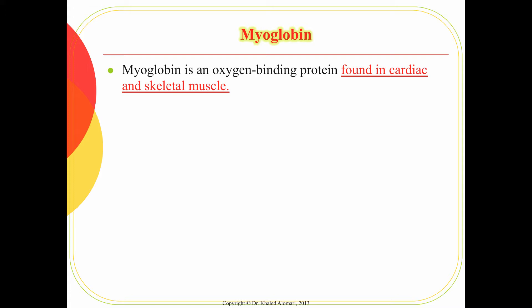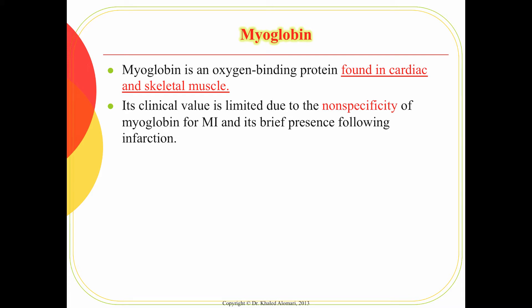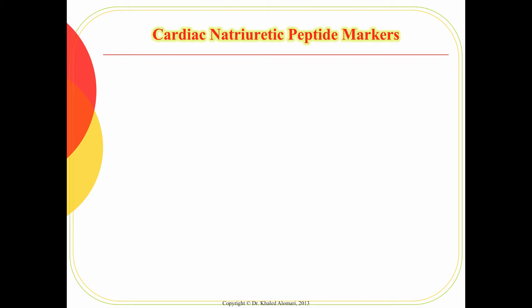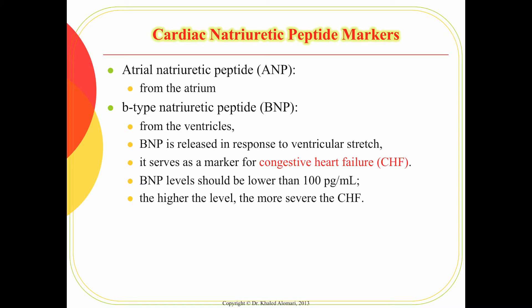Myoglobin is an oxygen-binding protein found in the myocytes of the heart as well as skeletal muscle. Because it's also present in skeletal muscle, it is not specific to the heart, so it's rarely used in cases of MI. The next type of markers are peptides — ANP and BNP — which are released when the ventricles or atria stretch, signaling that there is a problem.